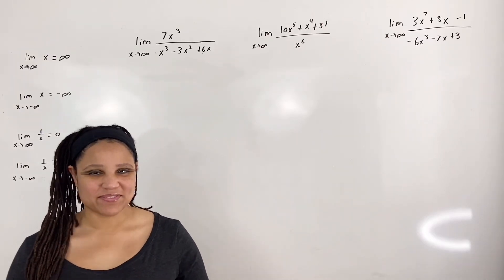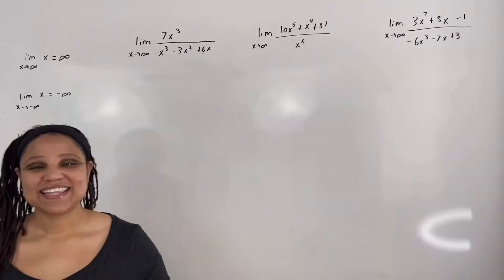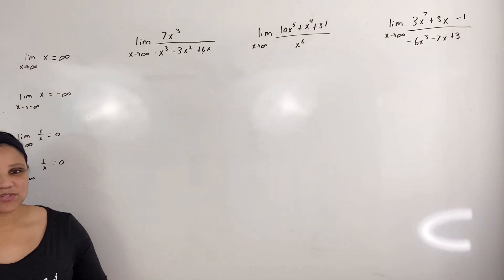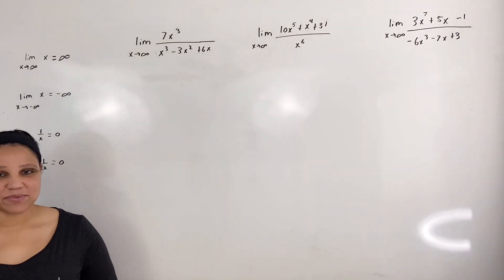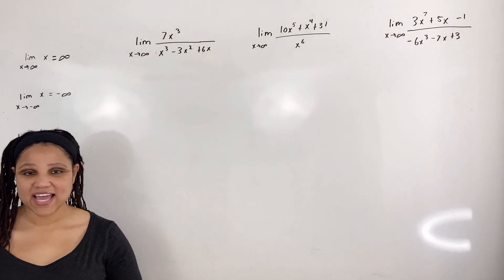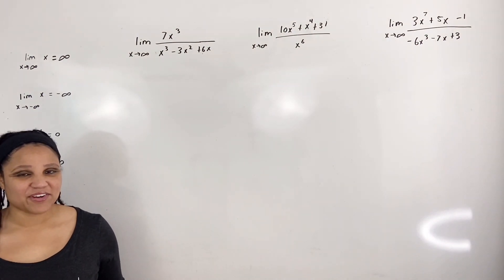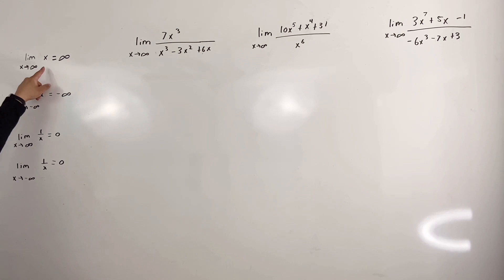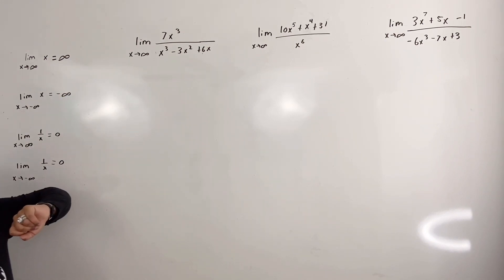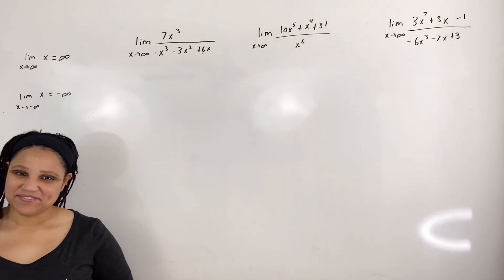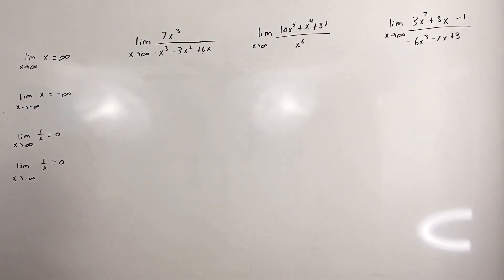In this video we are going to evaluate limits at infinity. Let us begin with the basics. We know that if we have a variable x and if we were to plug a very large positive number in for x, our output will be a very large positive number. Thus the limit as x approaches positive infinity of x is equal to positive infinity, and the limit as x approaches negative infinity of x is equal to negative infinity.